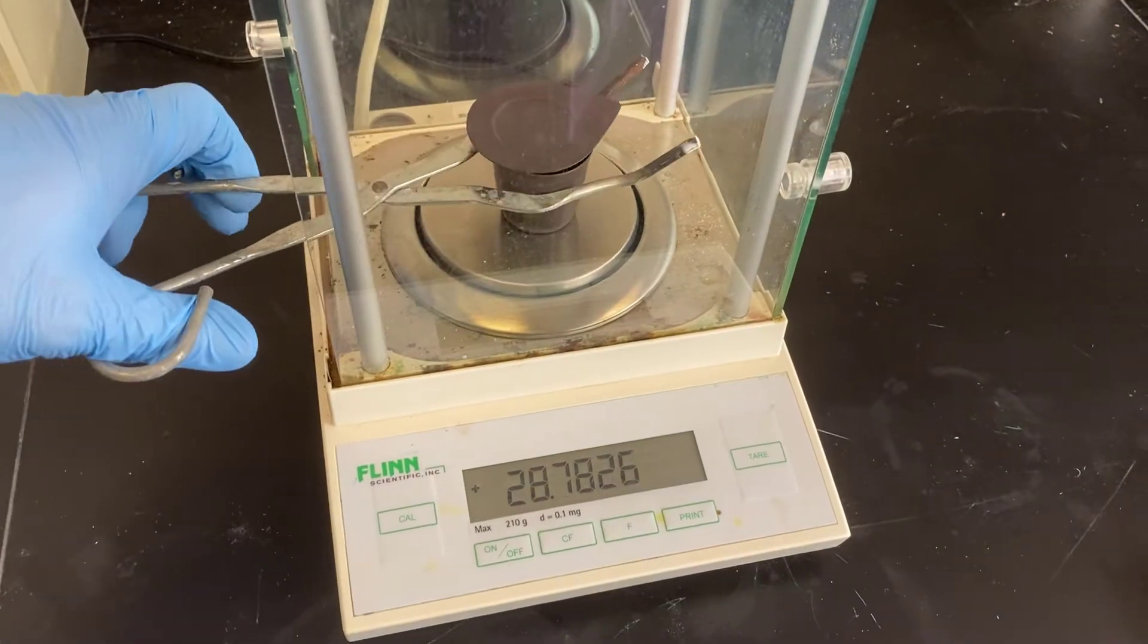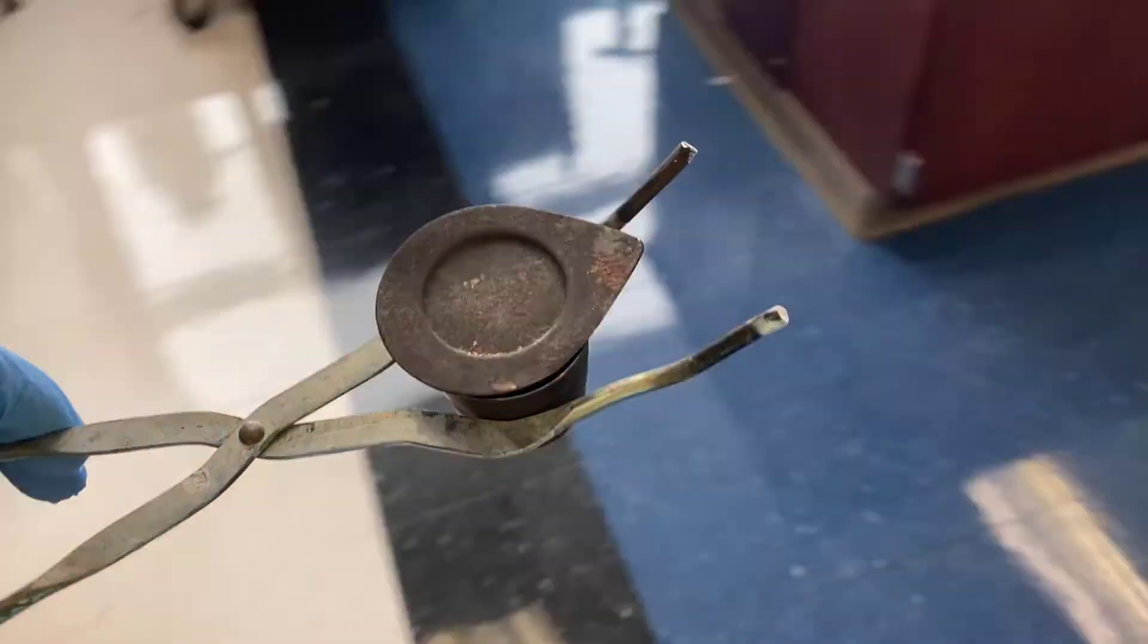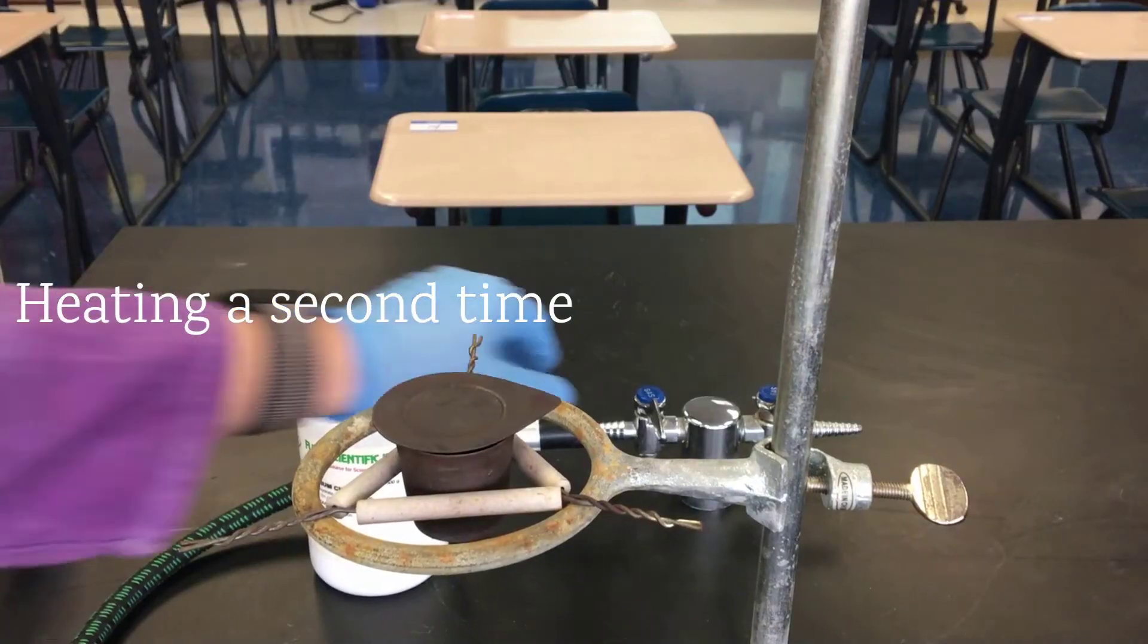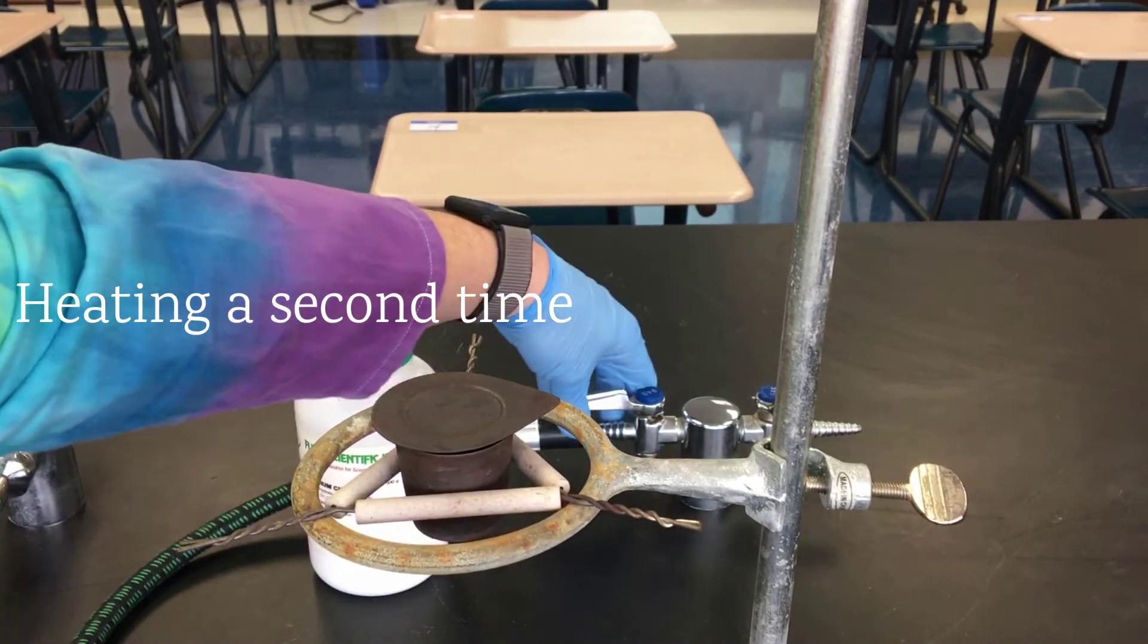We'll go ahead and take it back to our apparatus, to our clay triangle and our ring stand. We'll go ahead and heat it a second time. Again, we're going to heat it for about five minutes.